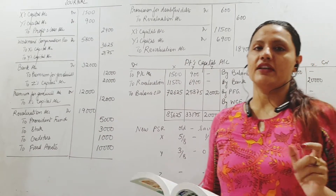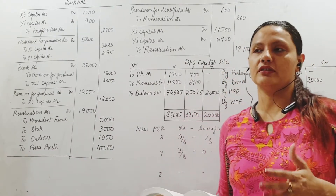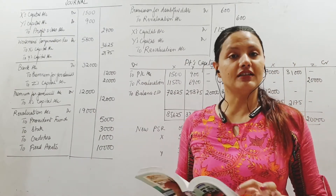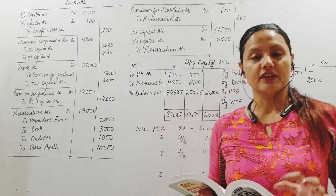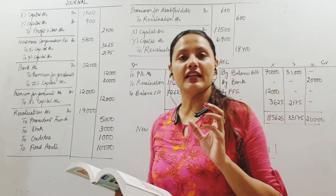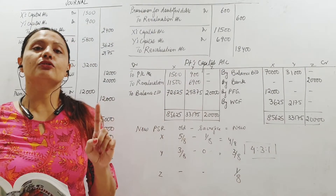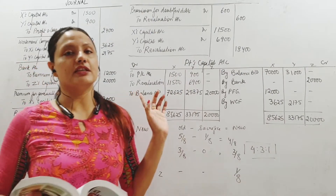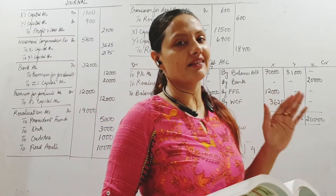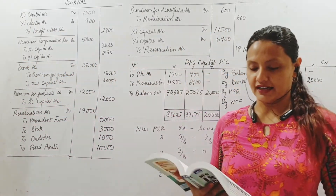First thing, whenever you have to start with this admission problem, you should see the balance sheet very clearly. Whatever adjustments have to be made from the balance sheet, you should pass entries for that first. Otherwise, chances are you will miss out on that.